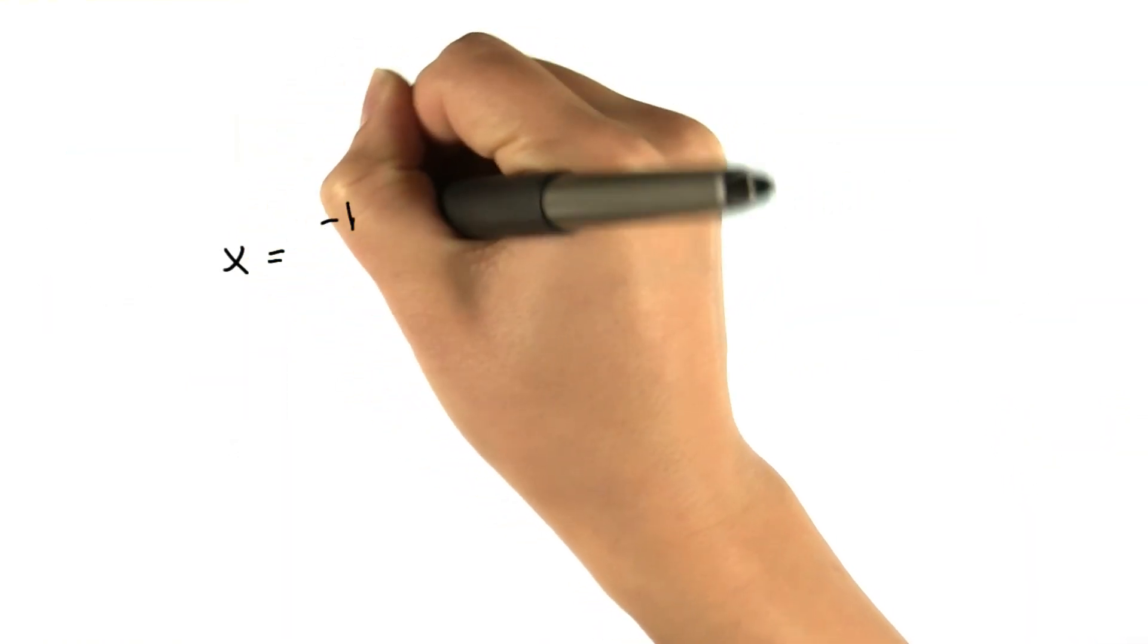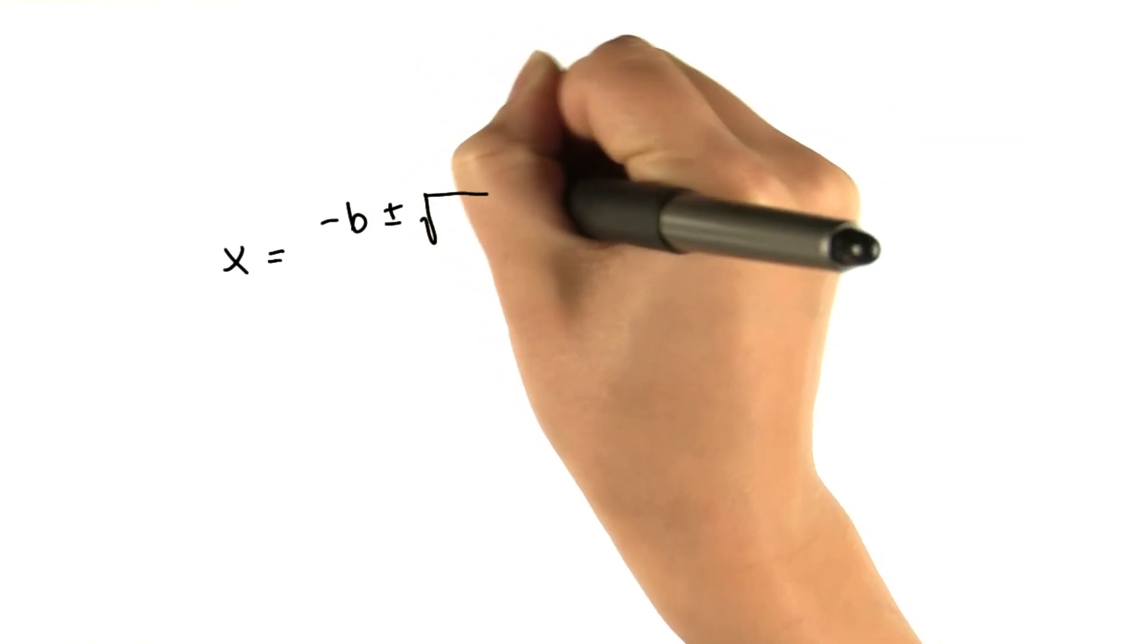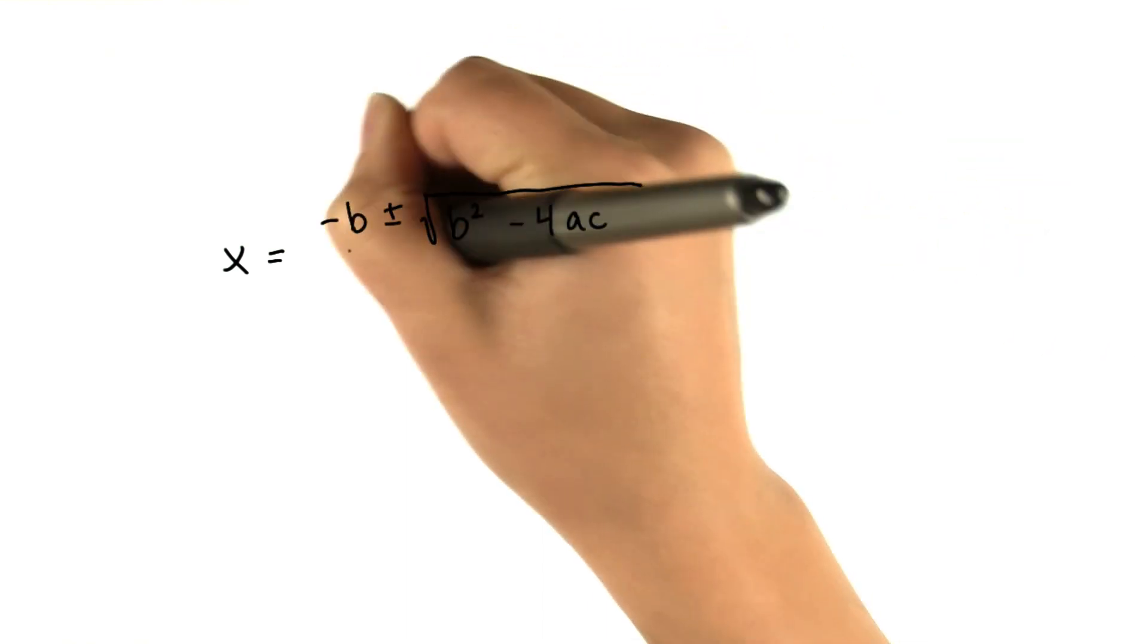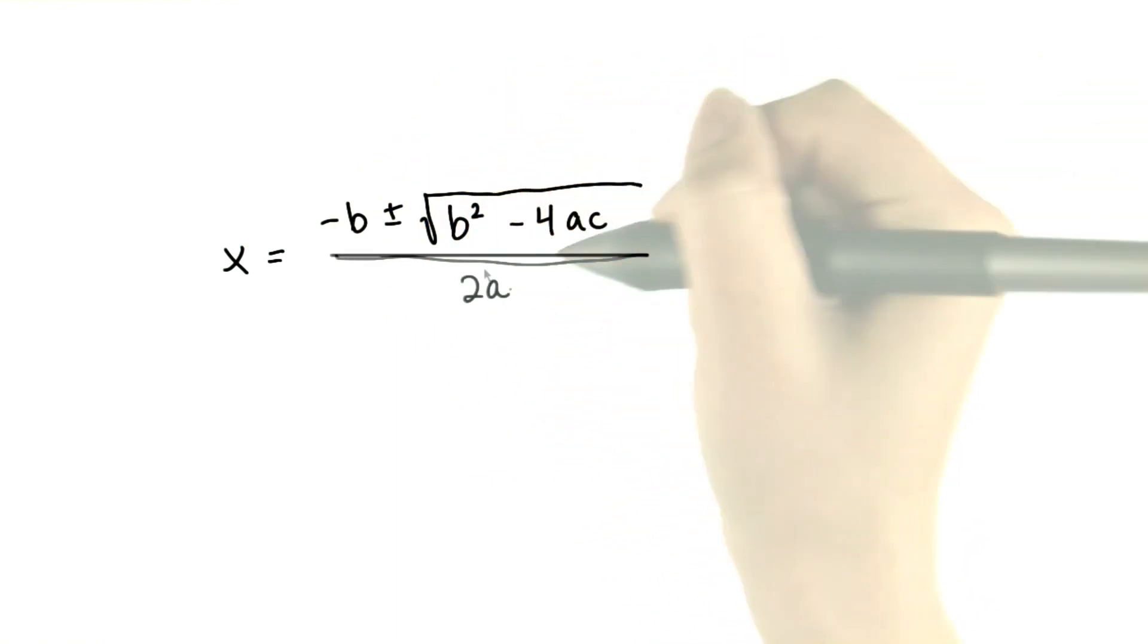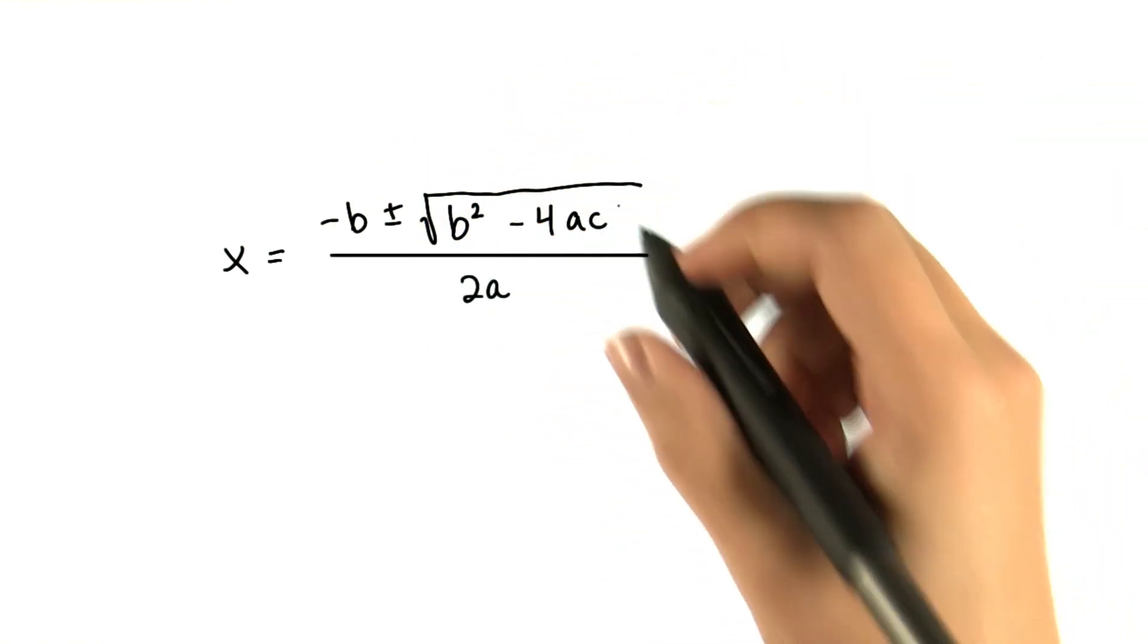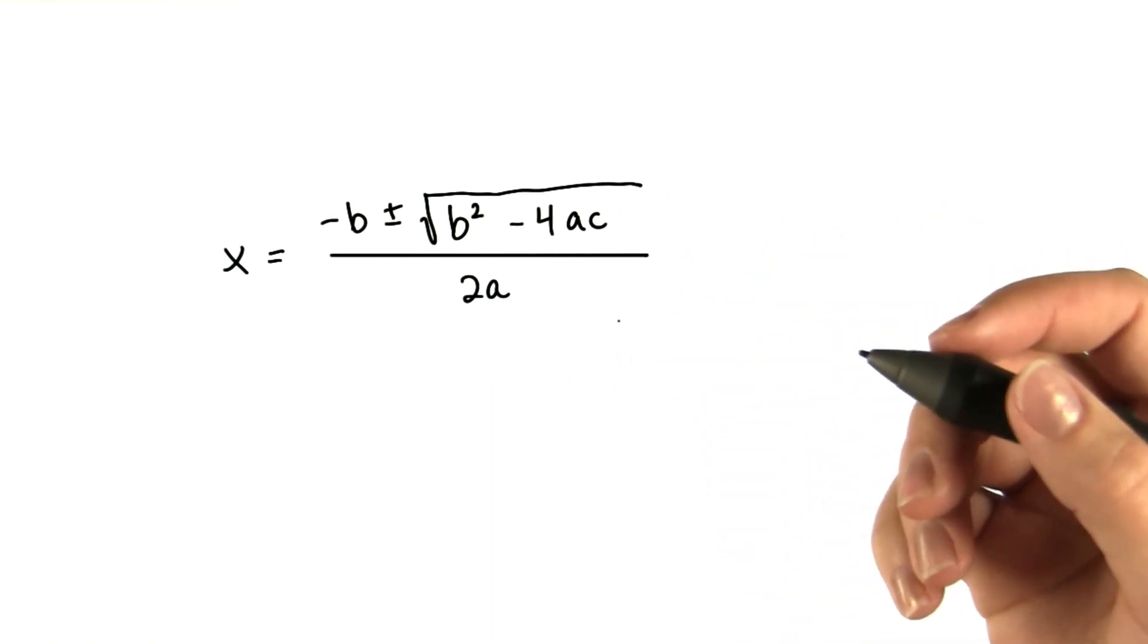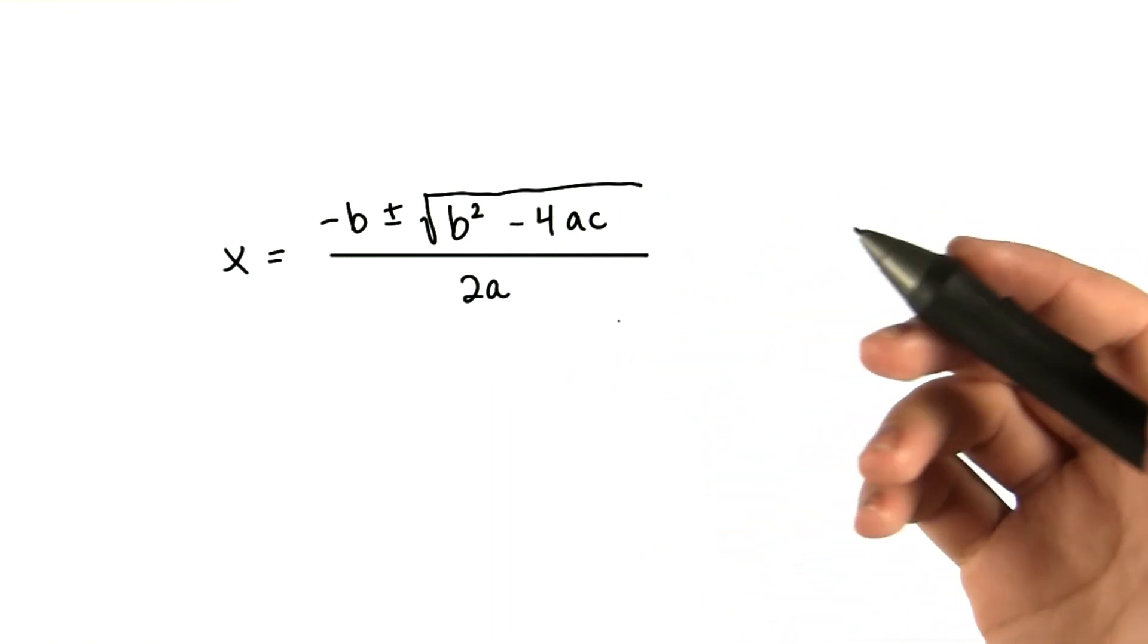X equals negative b plus or minus the square root of b squared minus 4ac all over 2a. And those are the roots of a quadratic function. Some people learned it in middle school as a song, and maybe that made learning it a lot more fun.